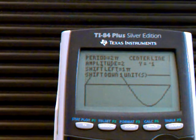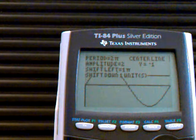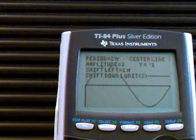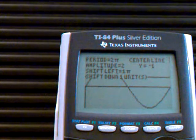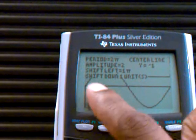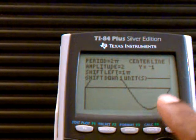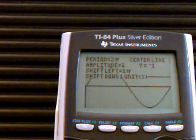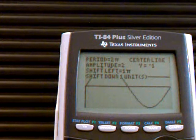The shift down is 1 unit. The center line is y equals negative 1, so the line that goes across the center here is y = -1. This is the zero, or our x-axis.